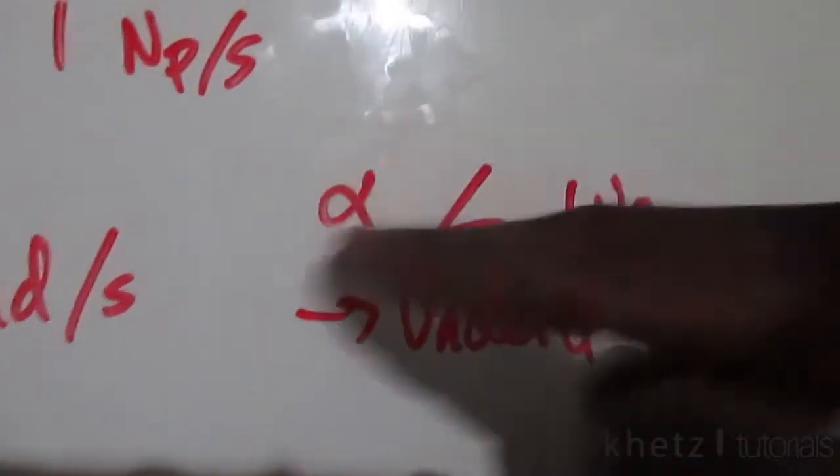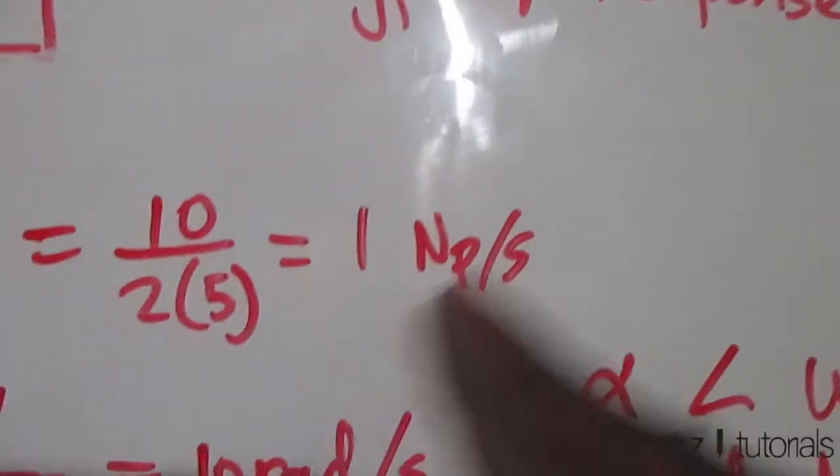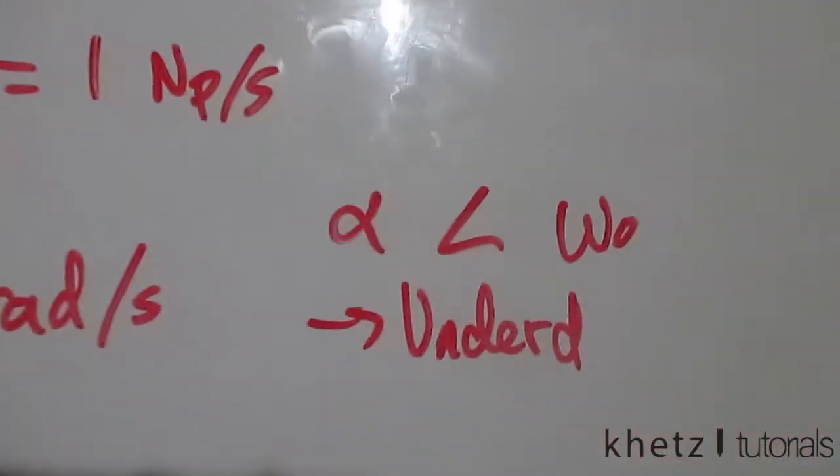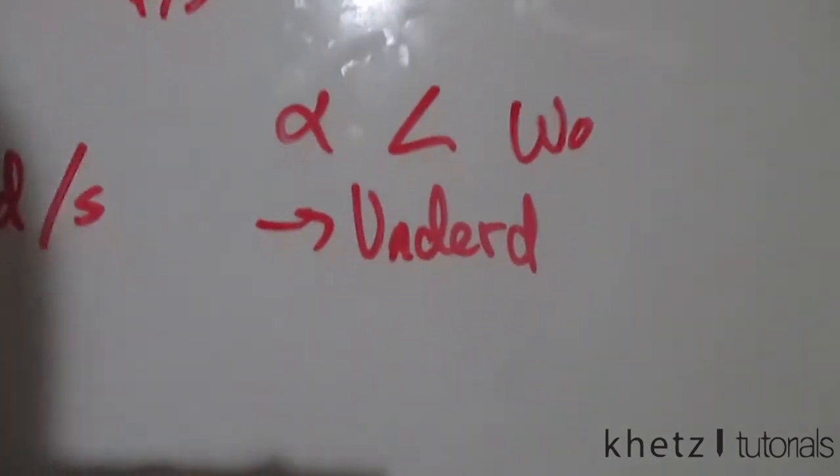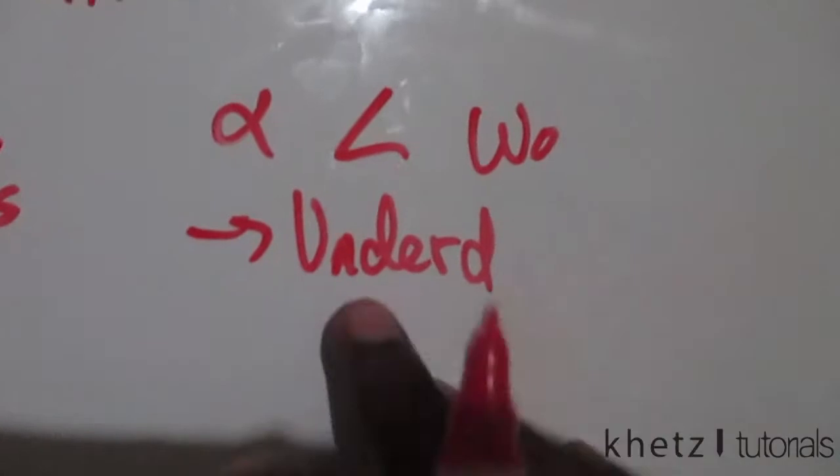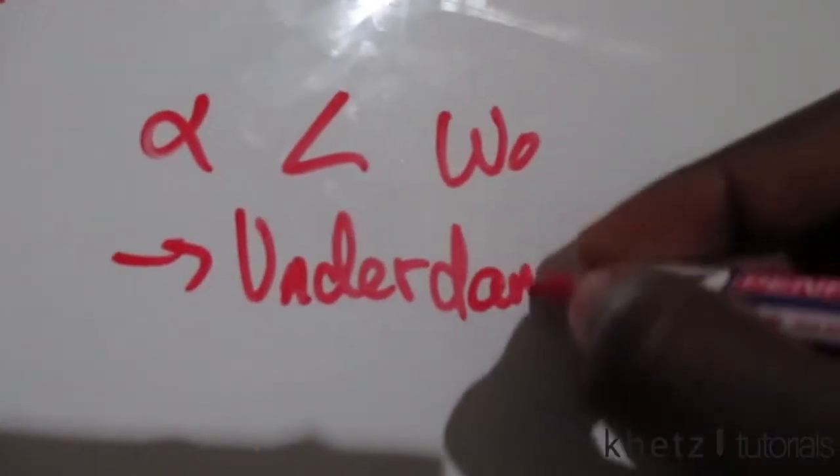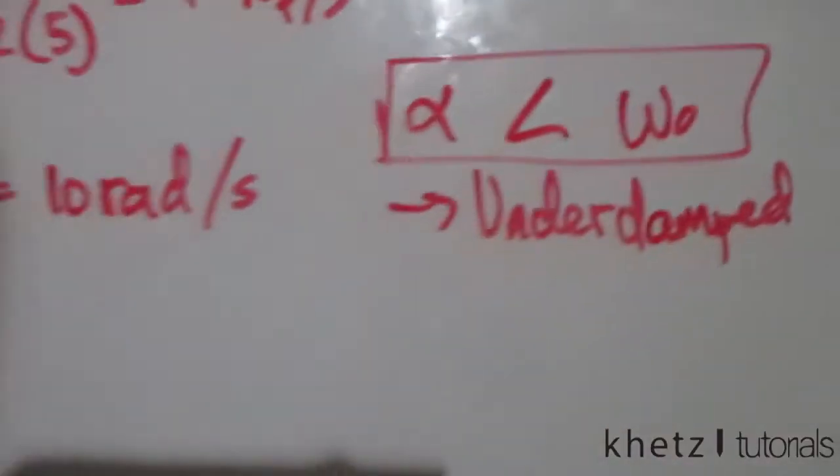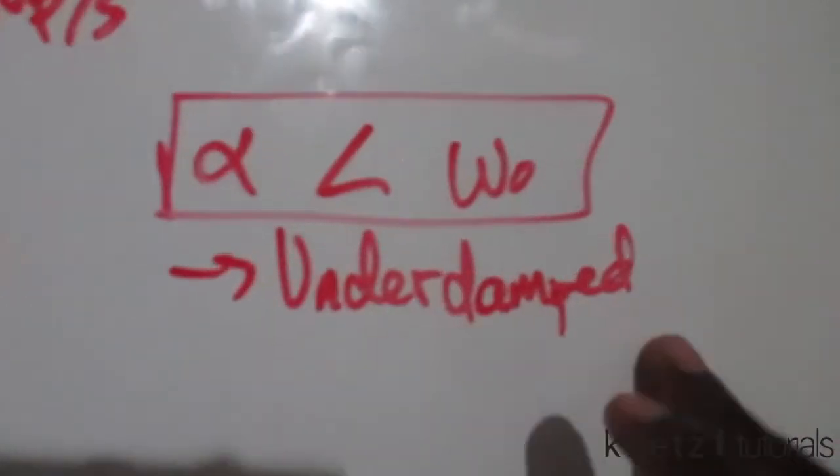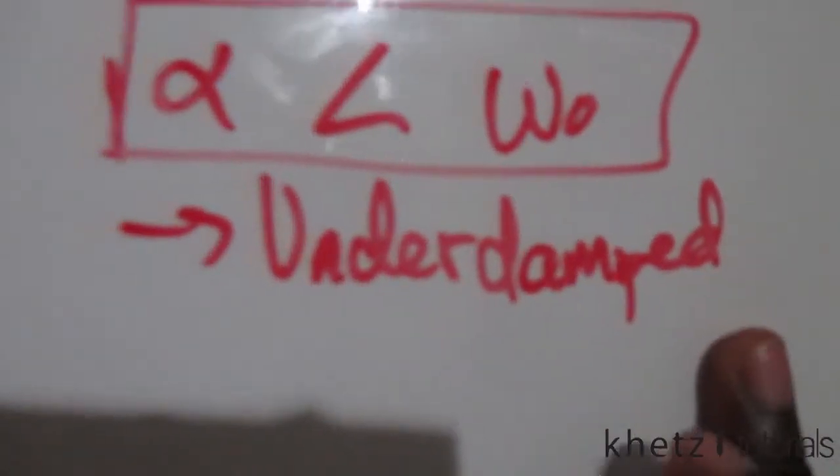We have damping because alpha is not zero. If it were zero, it would be undamped with no attenuation. Since alpha is less than omega_o, this is an underdamped response, so you need to turn your calculator to complex mode.